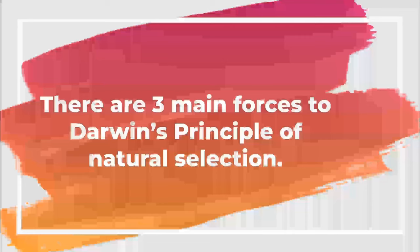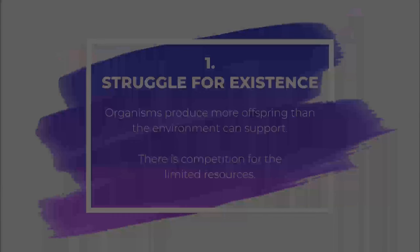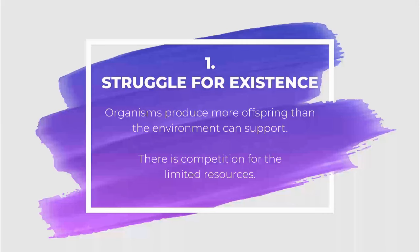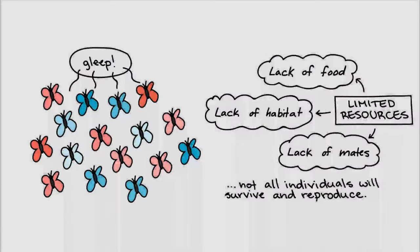Darwin gave us three main forces to this principle of natural selection. The first one is a struggle for existence. Organisms produce more offspring than the environment can support. If all populations have the potential to produce more offspring than can survive, members of a population will compete for the resources. Darwin described this competition as a struggle for existence — there's competition for those resources. Here I have a population, a group of butterflies. There are limited resources like a lack of food, a lack of habitat, and a lack of mates, which means that not all individuals are going to survive. So then there's the question: if not all individuals are going to survive, who's going to?